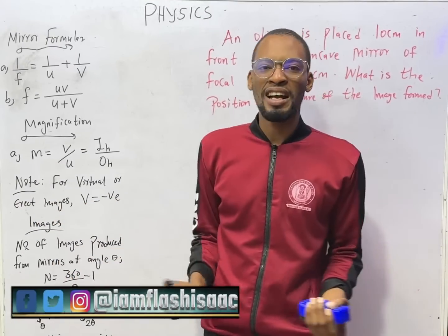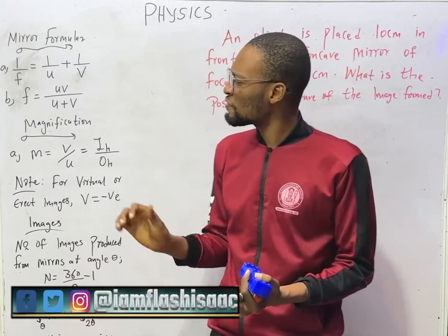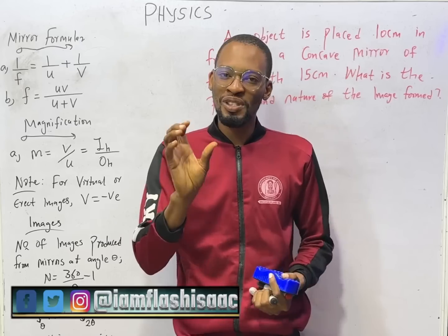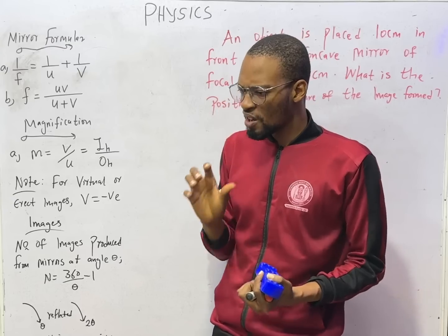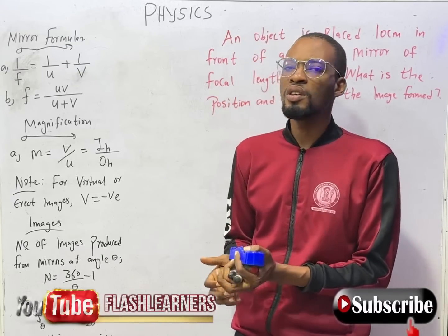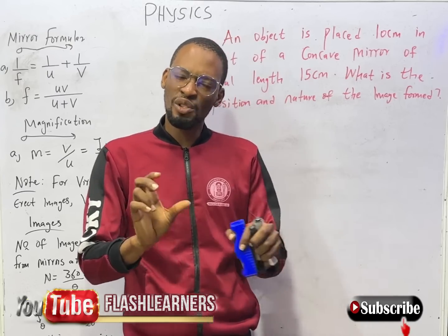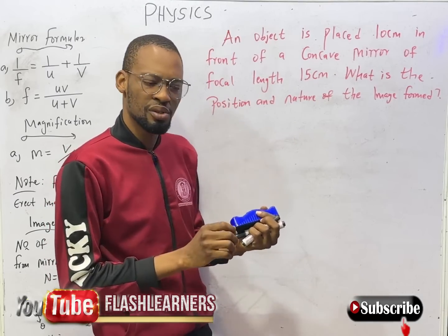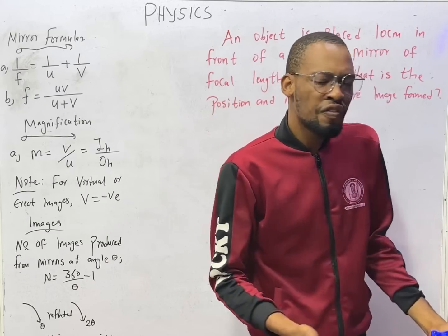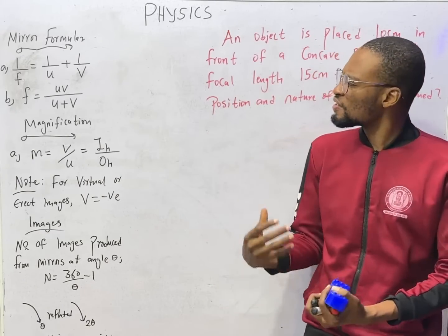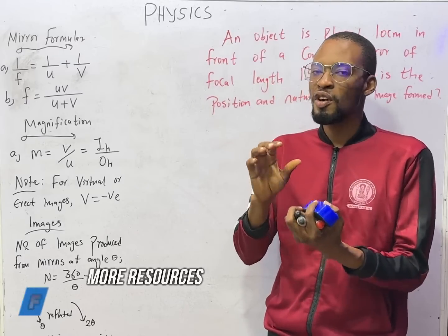Hello guys, I am Flash Isaac and you are welcome to episode number 57 of the 120 Days to JAMB Physics with Flash Isaac. In the last 3 episodes, we did a lot when it comes to light waves and mirrors. We talked about images formed in a mirror being as a result of reflection.